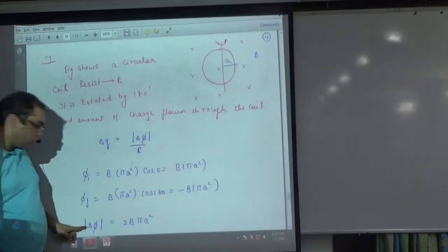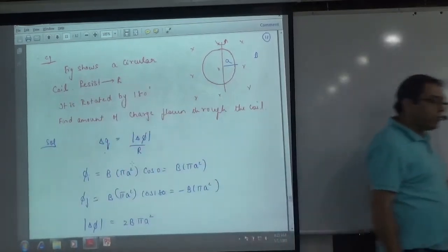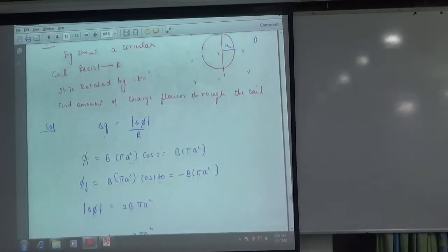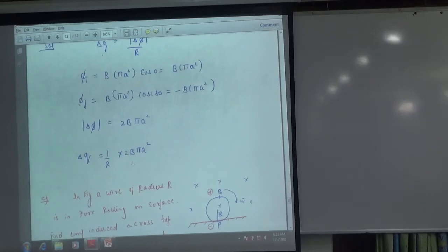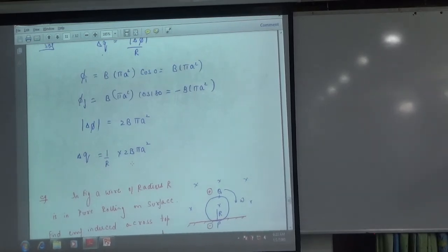Initial and final flux, if we minus both, then the magnitude will come. Delta Phi, change in flux, will be divided by resistance. You will have an answer. Got it?